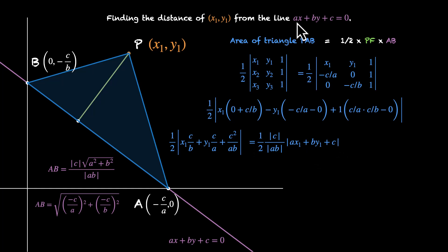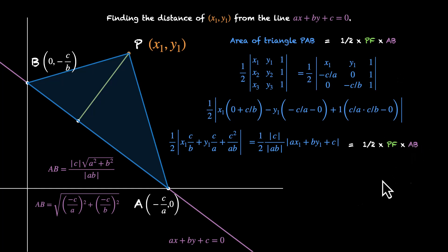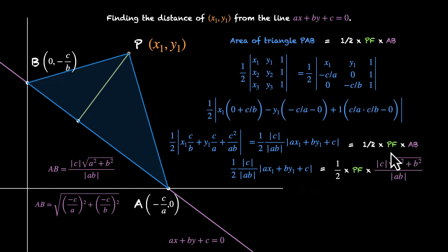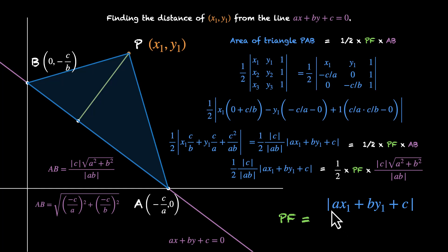This looks very close to the equation itself — ax plus by plus c. Here we have ax1 plus by1 plus c. So this is our area of triangle. The right-hand side is half times PF times AB. Plugging in the value of AB, we get: half times mod(c)/mod(ab) times mod(ax1 plus by1 plus c) equals half times PF times mod(c) times square root(a squared plus b squared) divided by mod(ab). A lot of things cancel: half cancels, mod(c) cancels, mod(ab) cancels. What we end up with is PF equals mod(ax1 plus by1 plus c) divided by square root(a squared plus b squared).